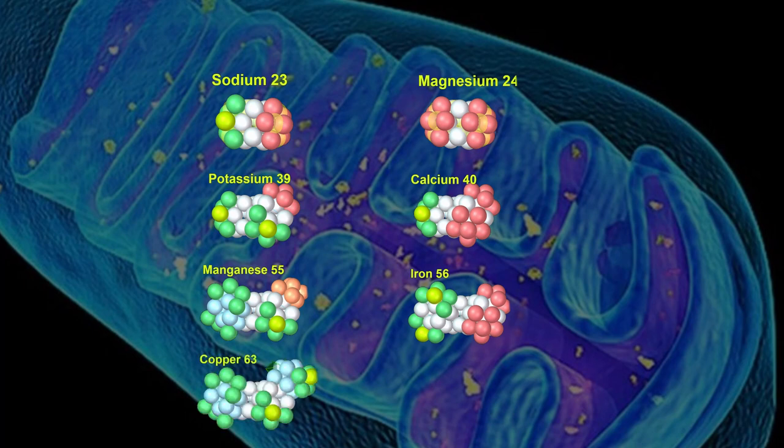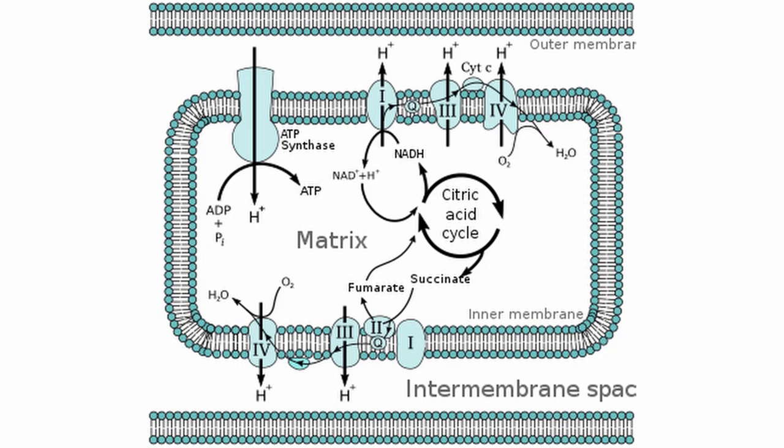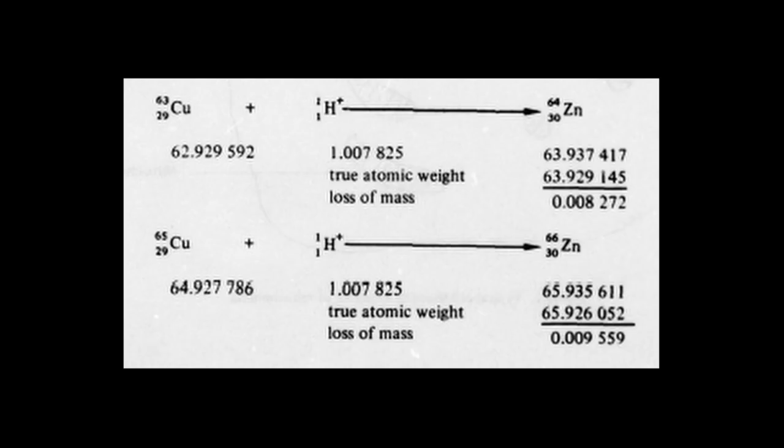We also find copper and zinc which differs by only one proton. H plus and OH minus ions have been produced and are maintained in separate compartments. Conversion of copper to zinc is also accompanied by a loss of mass and therefore a production of energy.